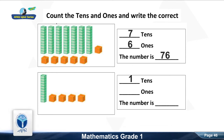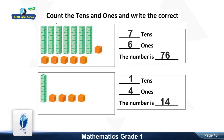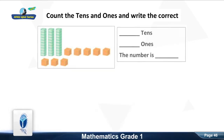Now the next question. Count the tens. Good, it is 1 ten. Now count the ones. Good, it is 4 ones. The number is 14. Now the next question. Count the tens. Good, it is 3.